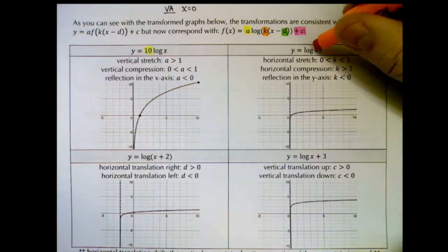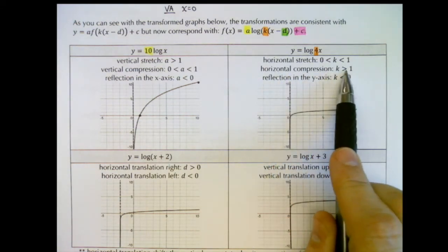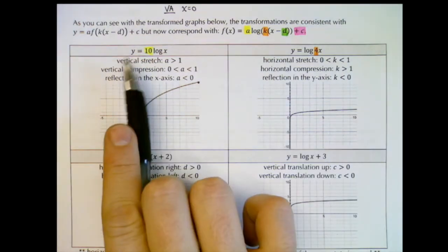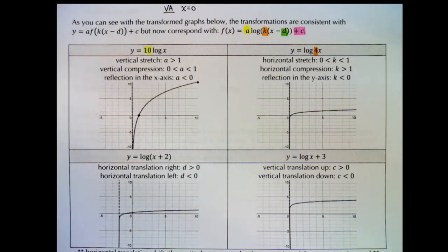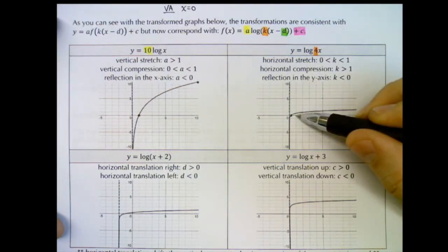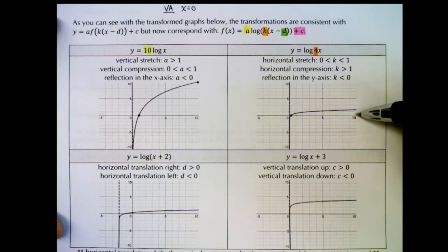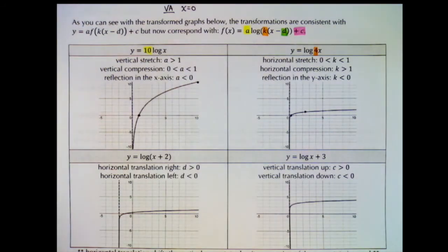Moving on to k: k is inside the log multiplying the x. In this case our k is 4. A k value bigger than 1 produces a horizontal compression — k works in the opposite fashion from a. So we reach those y-values of 0 and 1 much faster. The x-intercept occurs much closer to the y-axis at (0.25, 0), and instead of needing x=10 to reach y=1, we get there around x equals 2 or 2.5. We've compressed the graph horizontally back toward the y-axis.